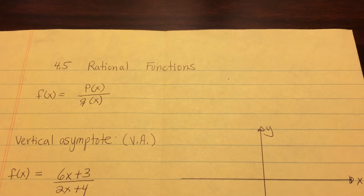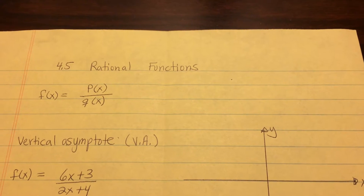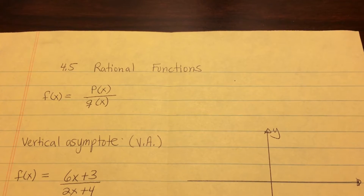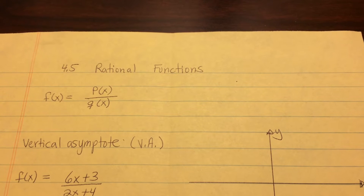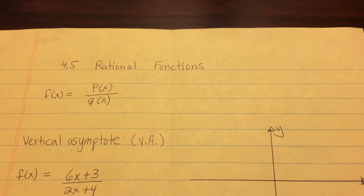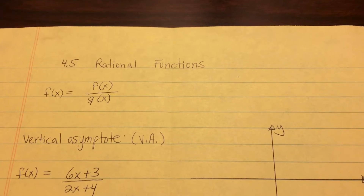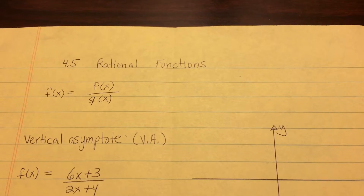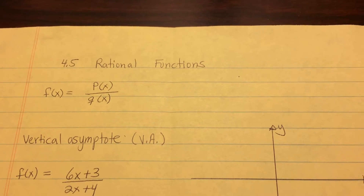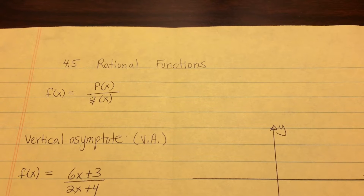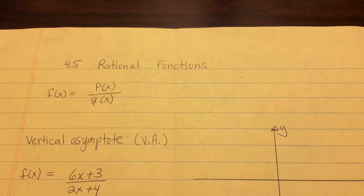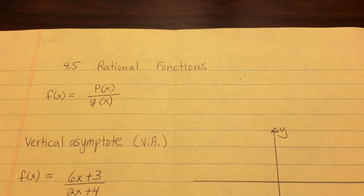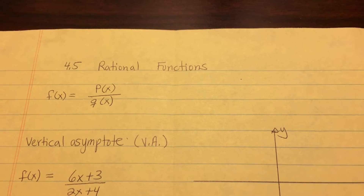This is 4.5 rational functions. There are two parts of the video: one part is just introducing the different types of asymptotes, and then the second part is actually graphing it. This first part is just identifying the different types of asymptotes and how to identify them.